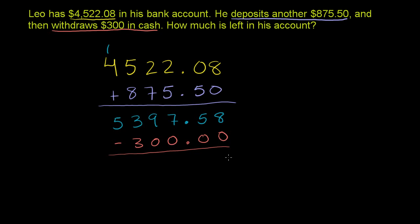8 minus 0 is 8. 5 minus 0 is 5. We have our decimal right there. 7 minus 0 is 7. 9 minus 0 is 9. 3 minus 3 is 0. And then 5 minus nothing here is 5. So he is left with, in his account, $5,097.58.